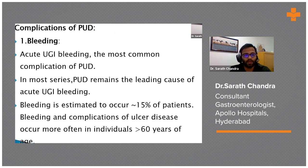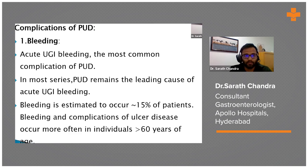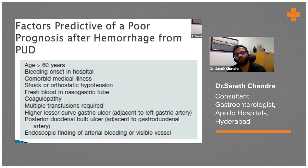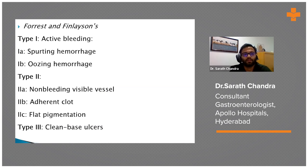The most common complication of peptic ulcer is bleeding. Almost 15 percent of patients may develop bleeding, especially those aged more than 60. Poor predictors of hemorrhage from peptic ulcer include age, shock, and multiple transfusions. The location of the ulcer is a poor indicator — especially lesser curvature ulcers, because they are adjacent to the left gastric artery, giving a high chance of bleeding. Posterior ulcers also have a high chance of bleeding.